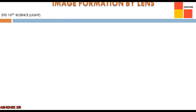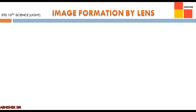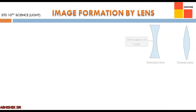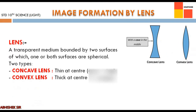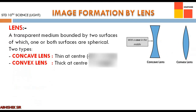Moving on to image formation by lens. First, let us study what is a lens and its types. A lens is a transparent medium bounded by two surfaces of which one or both surfaces are spherical. Based on that, we divide lenses into two types: concave lens and convex lens.